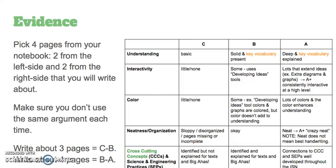If you're looking for a C to B range — B being around 85% — you can write about three of those four pages. If you're looking for a solid B up to an A+, you're going to write about all four pages.